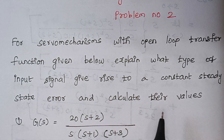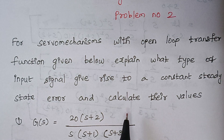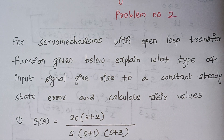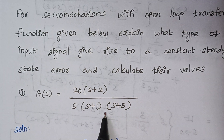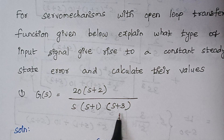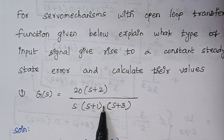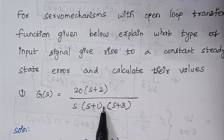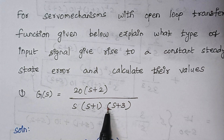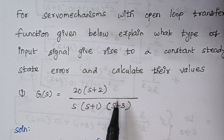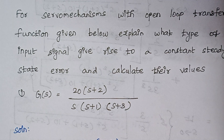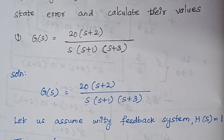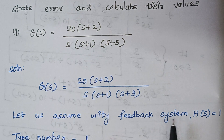And finally, we have to calculate the value of the steady state error. Our first problem: G(s) is equal to 20(s+2) divided by s(s+1)(s+3). This is our given open loop transfer function. Since the type of feedback is not given, we have to assume unity feedback.